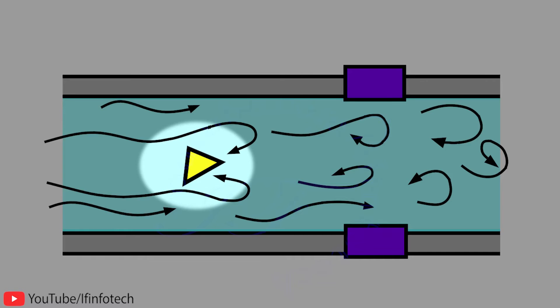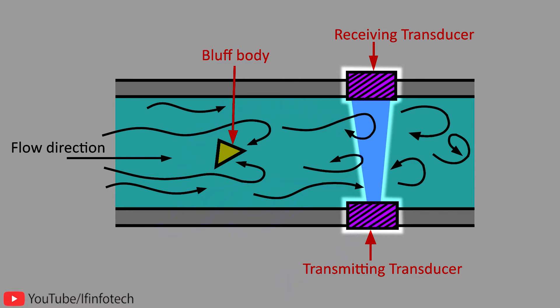Here, rate of vortex shedding is detected by ultrasonic sensor that monitors change in vortex pattern by transmitting a pulsating output signal.